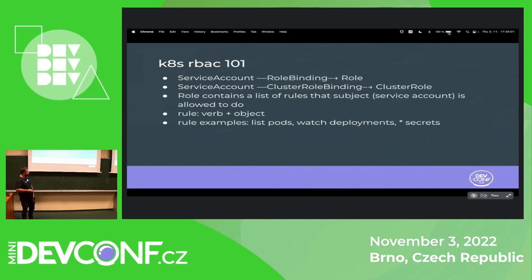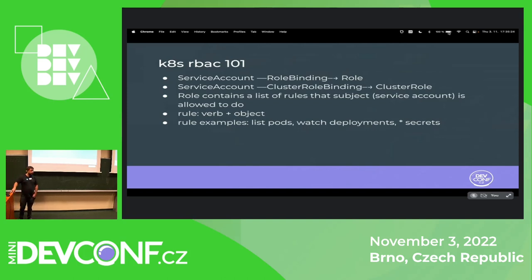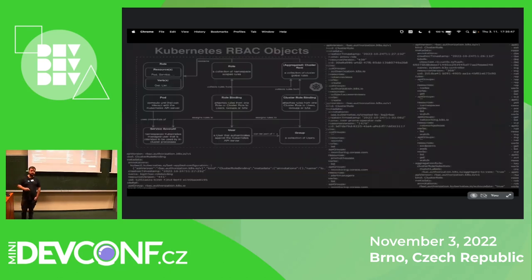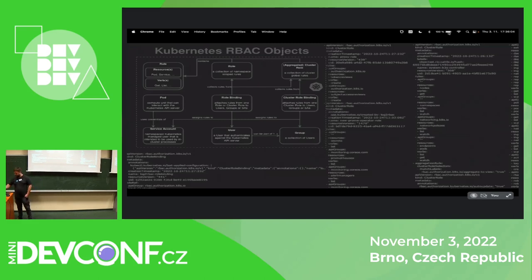Before diving into the topic, one slide about what RBAC actually is for Kubernetes. The model is: you've got a service account which is tied to a pod, and the service account has a role. This relationship is done through an object called a role binding (in case of a role) or cluster role binding (in case of a cluster role). What the role contains is a set of rules — a rule is a verb and an object. For instance, examples like you can list pods, or watch deployments, or star secrets where star represents all the verbs. These rules and objects are persisted in Kubernetes in YAMLs in an etcd database, and they are cumbersome to write.